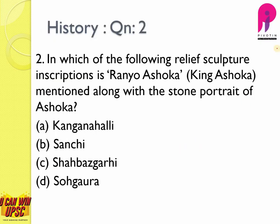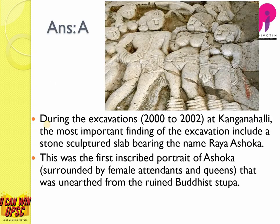Question number two: which relief sculpture inscription mentions 'Ranyo Ashoka' — King Ashoka — along with a stone portrait of Ashoka? To answer this question you must know the fact; no guesswork will be prospective in such questions. The answer is A — Kanaganahalli — where an important excavation finding is a stone sculptured slab bearing the name of King Ashoka.